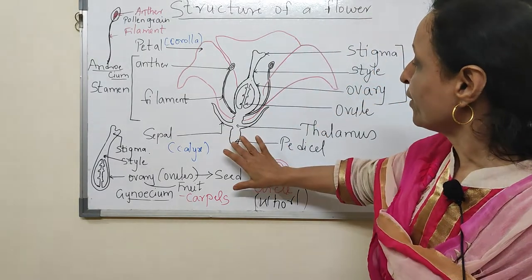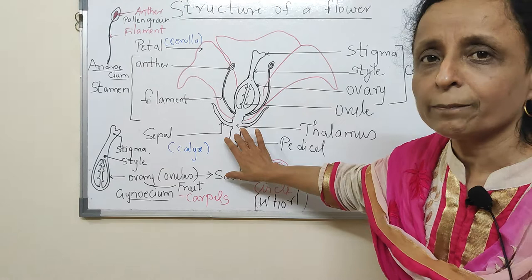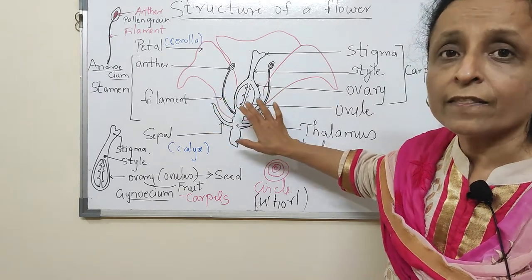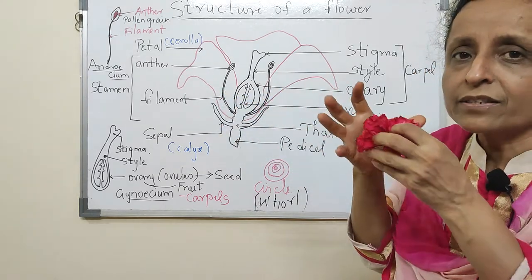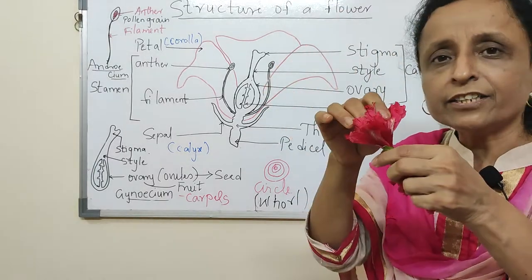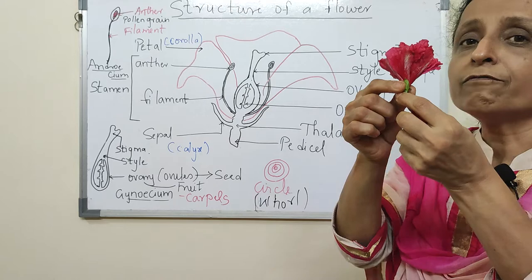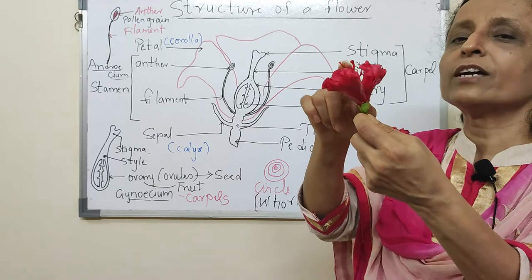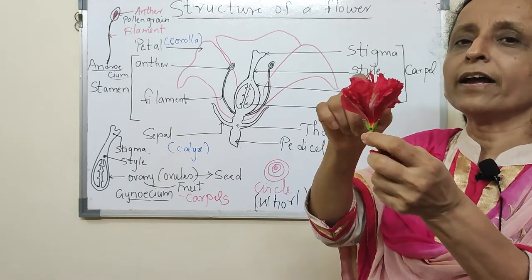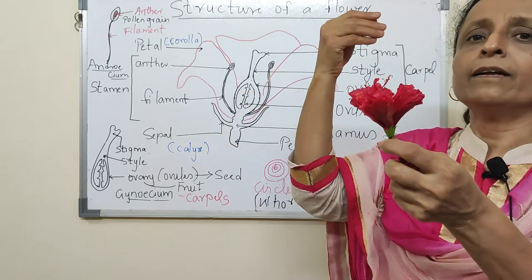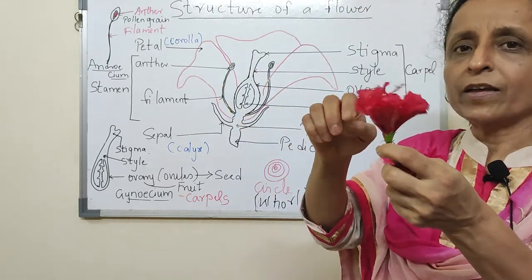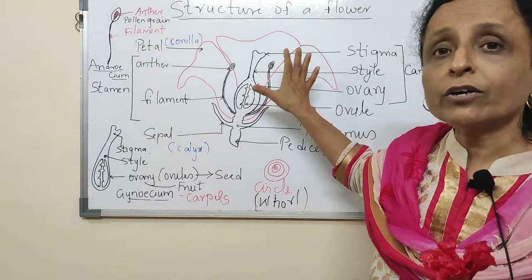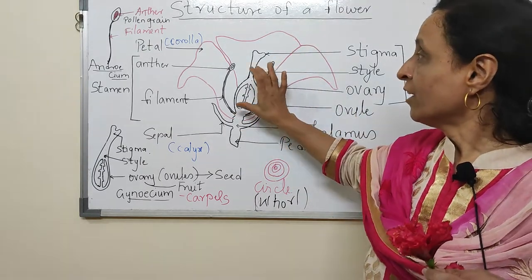Let us see the flower again. Here you can see the pedicel — the stalk which is attached to the plant — and that goes into the thalamus. The outermost whorl is the calyx, that is the sepals, green in color, that protects the flower in the bud condition. Next is the corolla — the petals — which attract insects. The petals might be red, pink, white, or purple. These are the non-reproductive structures.